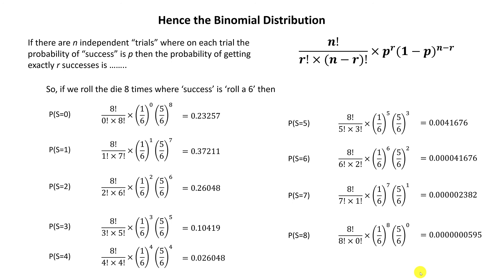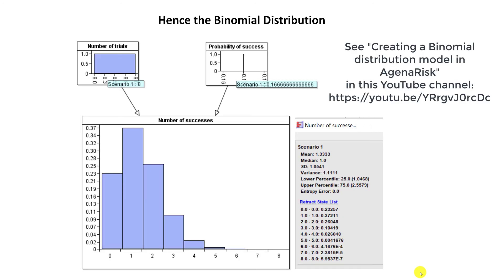Now you've got the formula, so you can use it to work out the binomial distribution. But of course, it's much easier to use a tool to do it. It's very simple in AgenaRisk to create that distribution, and it will produce this output — and you can see exactly what the probability distribution looks like. If you enjoyed this video, please check out the many others you'll find on my YouTube and Rumble channels. Goodbye.